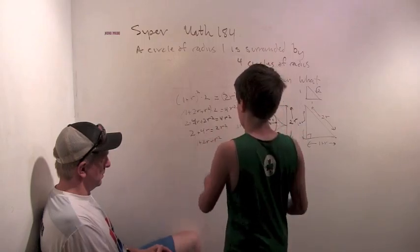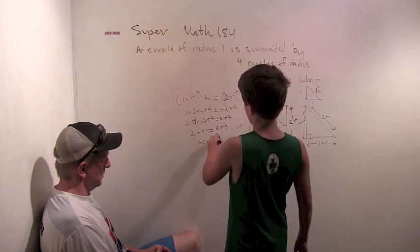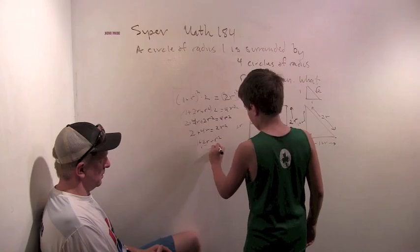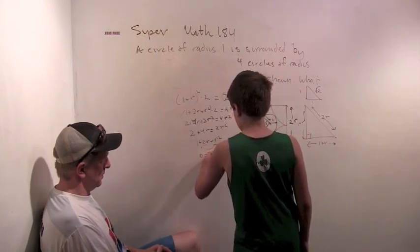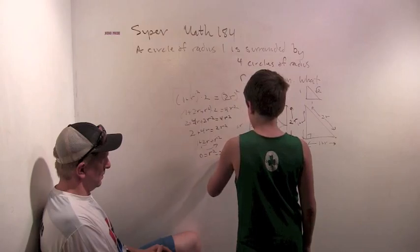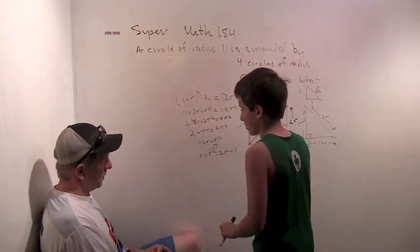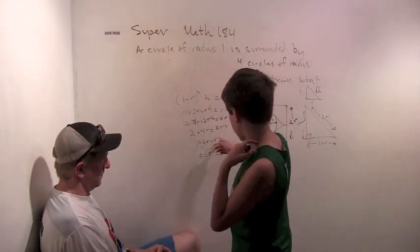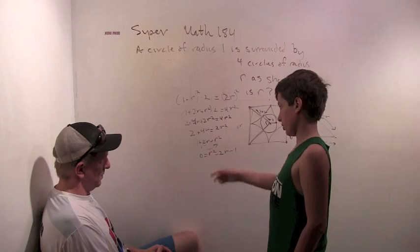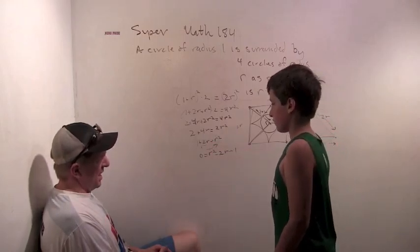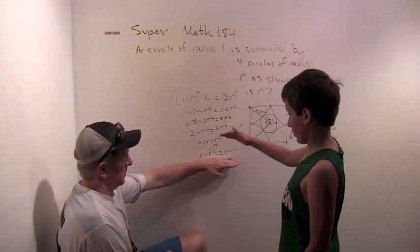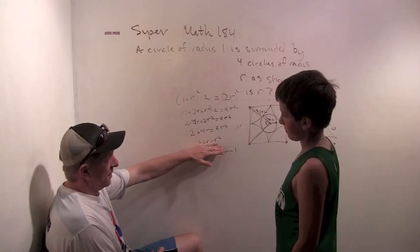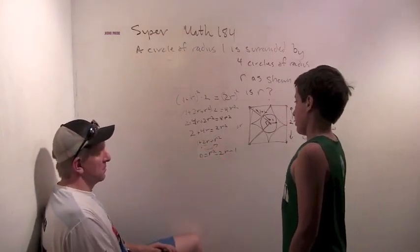So we can divide everything by two now, so one plus 2r is r squared. So we can say that, well you could either move the r to this side and do zero is r squared minus 2r minus 1. Or you could take, well I'm not sure if taking the square root of everything would keep the equation the same.